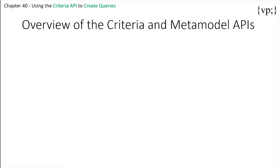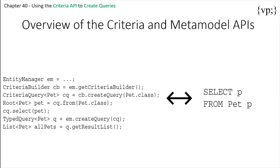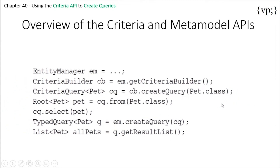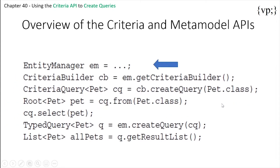You've heard of JPQL — another way of persisting data to and from databases. The Criteria API is built so that anything you do in one method, you can do in the other. For example, this Criteria query is equivalent to the JPQL query right next to it. This query demonstrates the basic steps to create a Criteria query.